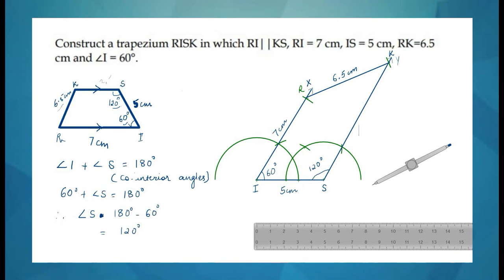In this video, we are going to construct a trapezium RISK in which RI is parallel to KS, RI is equal to 7 cm, IS is equal to 5 cm, RK equal to 6.5 cm, and angle I is equal to 60 degrees.